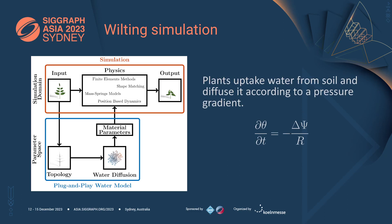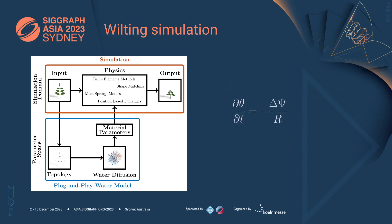The literature proposes a variety of different methods to estimate the water content and the water flow inside a plant. Between them, we have chosen one of the most common approximations, as it performs very well on every type of plant. Basically, a plant uptakes water from the soil and then diffuses it according to a water pressure gradient.